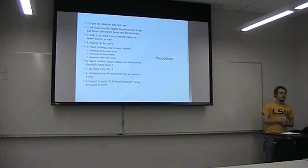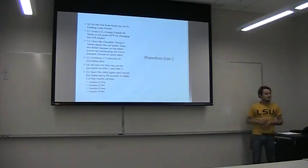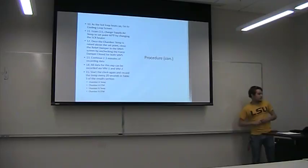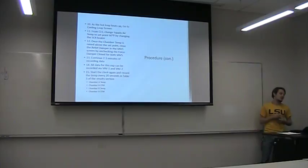From the cooling loop screen, then you make sure that you recorded the original initial dry air bulb temperature and relative humidity and the dew point temperature. You go through the VAV 1 screen and you input the cooling temperature set point to the dry bulb temperature set point from step 2. Do step 6 for the VAV 2 for the other system. And then you go to the heating loop in your reserve interface and make sure the fan set point is at 11 feet per second. You go to the same heating loop in your reserve interface and input the SCR heat output and make sure that's at 95 degrees. As the loop heats up, go to the cooling loop screen. Change from the cooling loop screen, change supply air temperature to set point at 60 degrees Fahrenheit by changing the SCR here. Once the temperature is raised, the chamber temperature is raised by one for the set point, close the relief dampener valve for VAV 1 screen. And then by unchecking the force dampener closed for both VAVs, so basically it starts actuating and actually controlling the airflow.